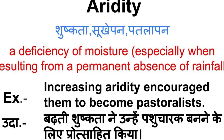For example: increasing aridity encouraged people to become pastoralists — yonin, Bharti Shushakta yonin Pashucharak banne ke liye Pratsait kiya.